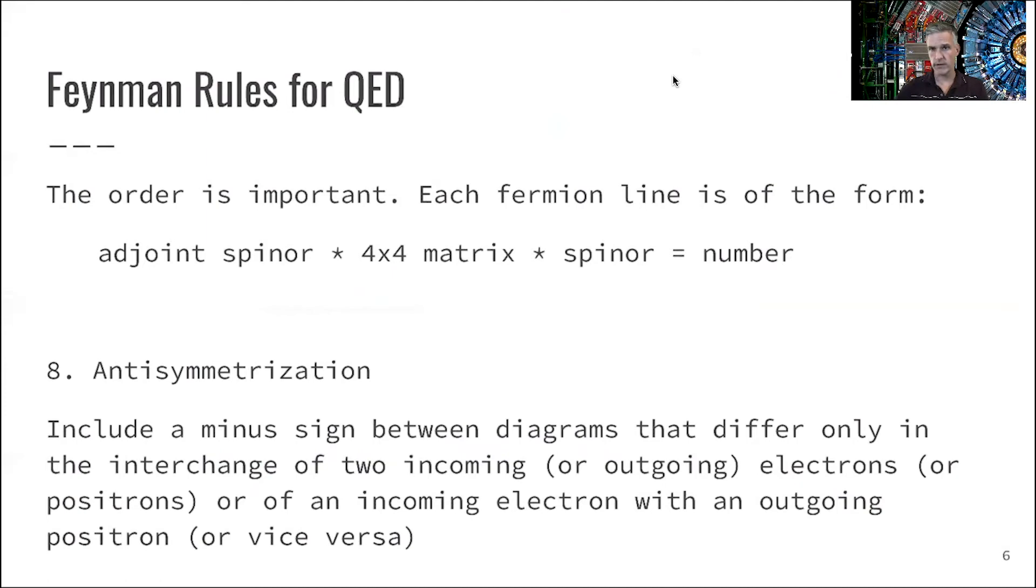We just follow a fermion as we go from left to right. We will find things which are always of the form: an adjoint spinor, a 4×4 matrix, and a spinor. The result of this is going to be a number.